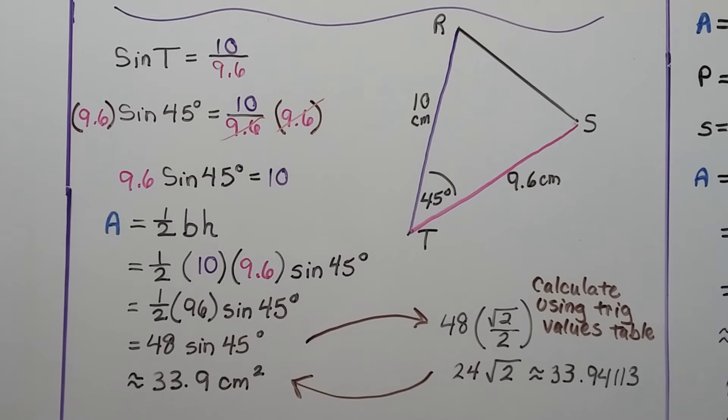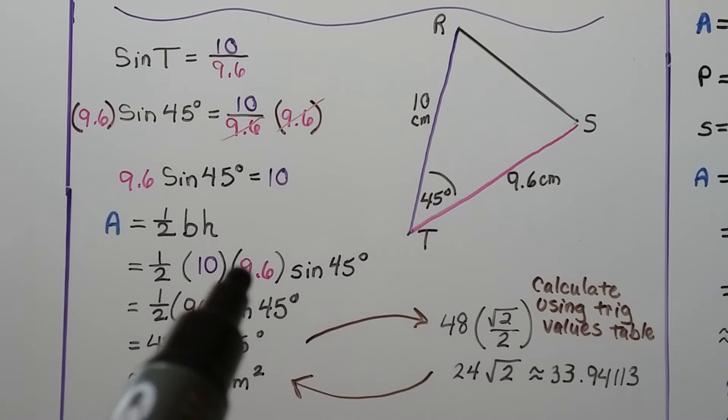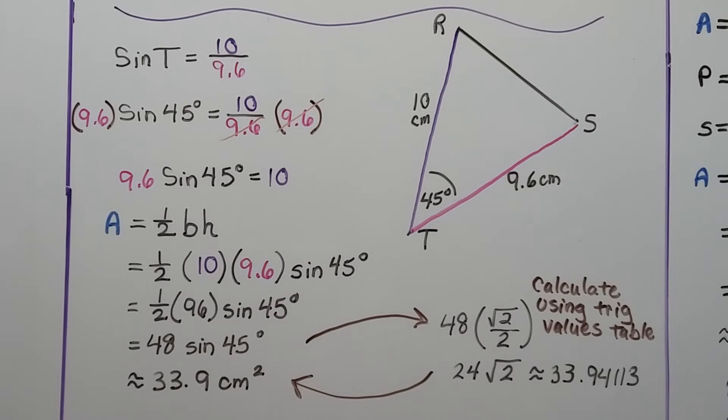We put this into our area formula of 1/2 base times height, and we get 1/2 times 10 times 9.6 times the sine of 45 degrees. That's 1/2 times 96, which is 48 sine of 45 degrees. We can calculate using trig table values, and we end up with approximately 33.9 centimeters squared. We'll round it to the nearest tenth place, so we just drop it off after the 9. So we were able to find the area with two sides and the included angle.